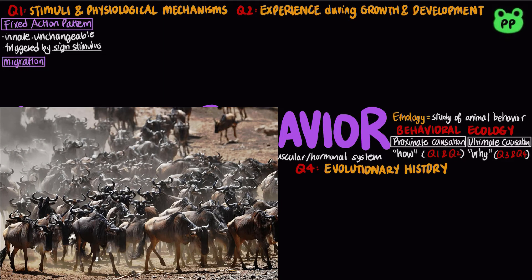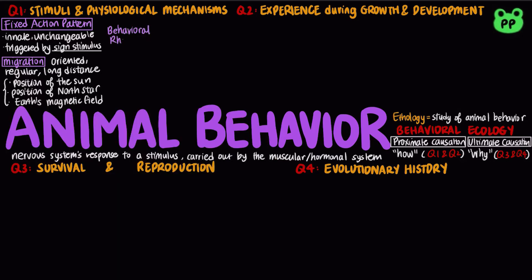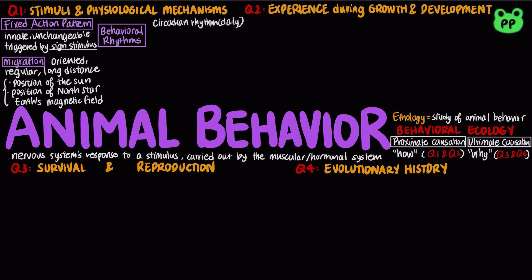Migration refers to a regular long-distance change in location. Animals can orient themselves using the position of the sun and their circadian clock — an internal 24-hour clock that is an integral part of their nervous system. Animals can also orient themselves using the position of the North Star, as well as the Earth's magnetic field. Some animal behavior is affected by circadian rhythm, a daily cycle of rest and activity.